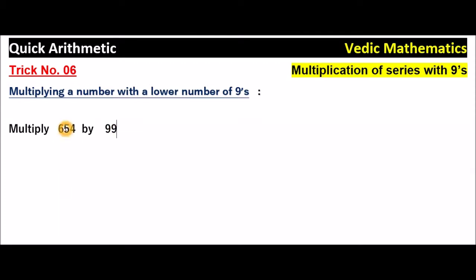First you take this 654. And how many 9's are there? Two 9's. So right side of this number 654, write 2 zeros. Two 9's are there, 2 zeros. Now subtract 654 from 65400.